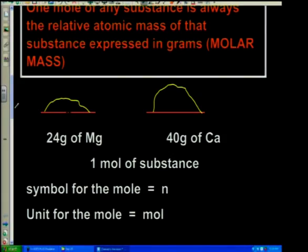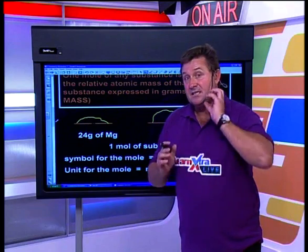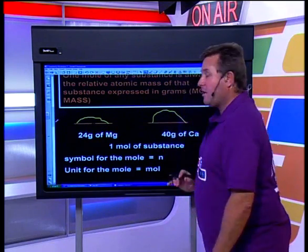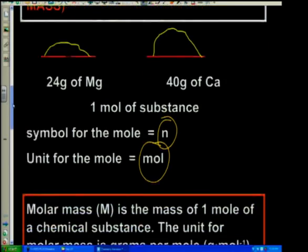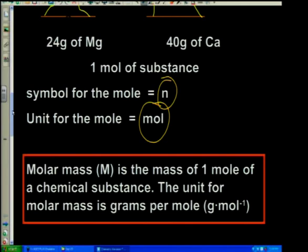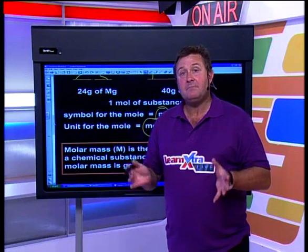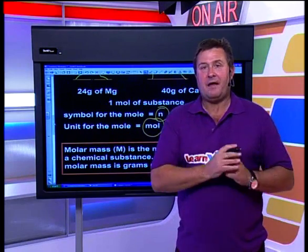Note that 24 grams of magnesium and 40 grams of calcium both equal one mole. There may be less mass in one pile, but there is still one mole because it's the relative atomic mass expressed in grams. The symbol for the mole is lowercase n, and the unit is mol. The molar mass unit is grams per mole.